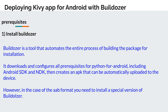In order to accomplish this task, the first step is to install the Buildozer tool. Buildozer is a tool that automates the entire process of building the package for installation. It downloads and configures all prerequisites for Python for Android, including Android SDK and NDK, and then creates an APK that can be automatically uploaded to the device. However, in the case of the AAB format, you need to install a special version of Buildozer.